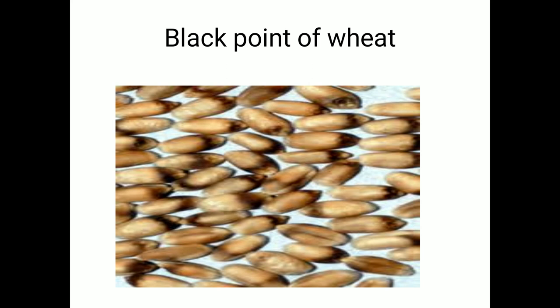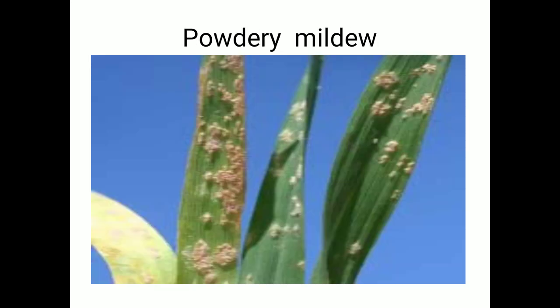Alternaria, Helminthosporium, and Fusarium are the most common fungi causing black point. The disease mostly occurs at dough stage. The primary source of infection is infected seeds and the secondary source is wind. For management, apply foliar spray with Mancozeb at 0.2% to reduce the severity of disease.